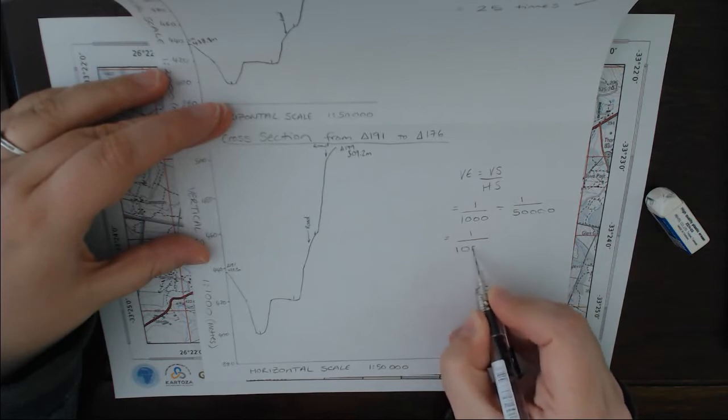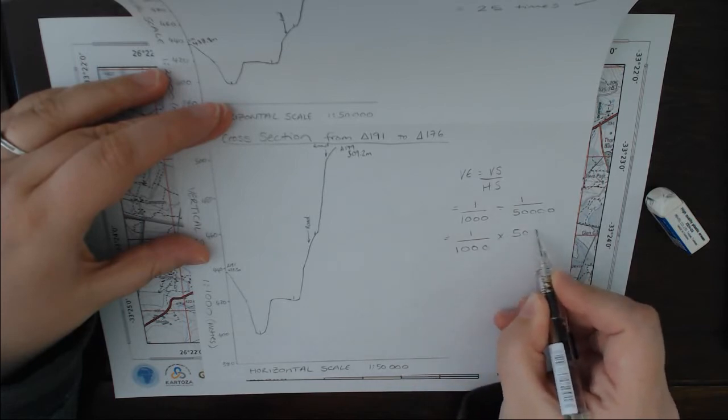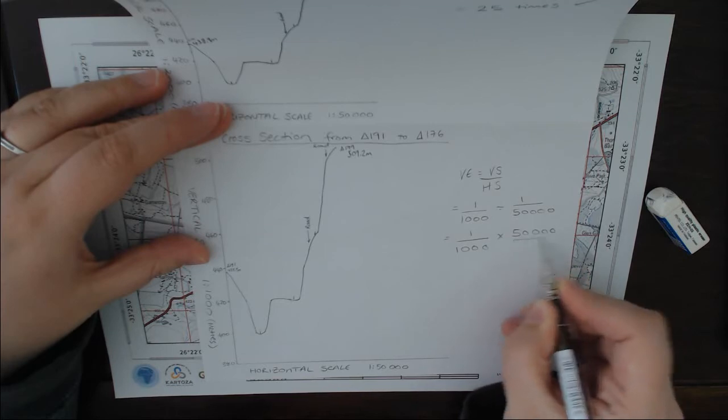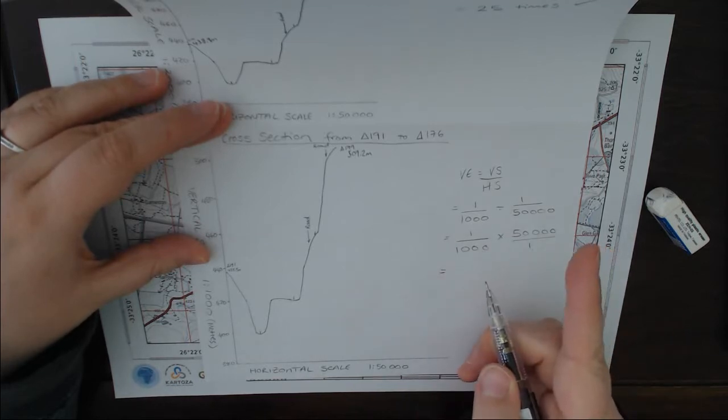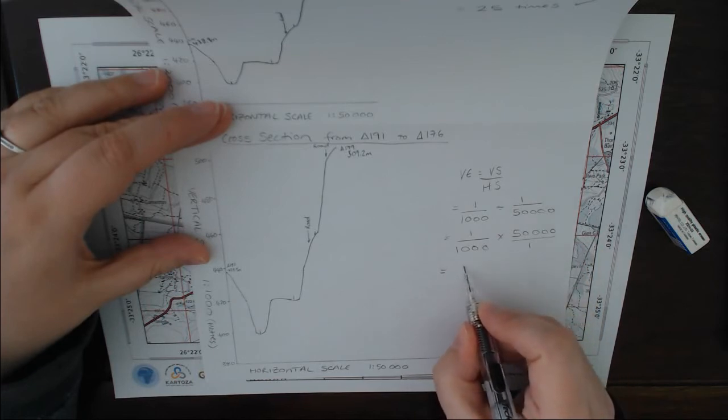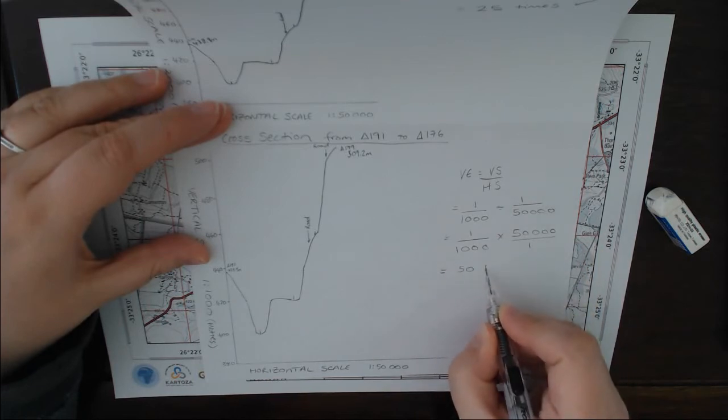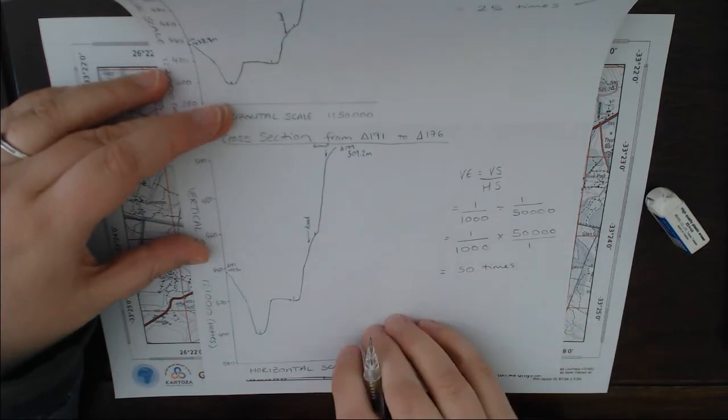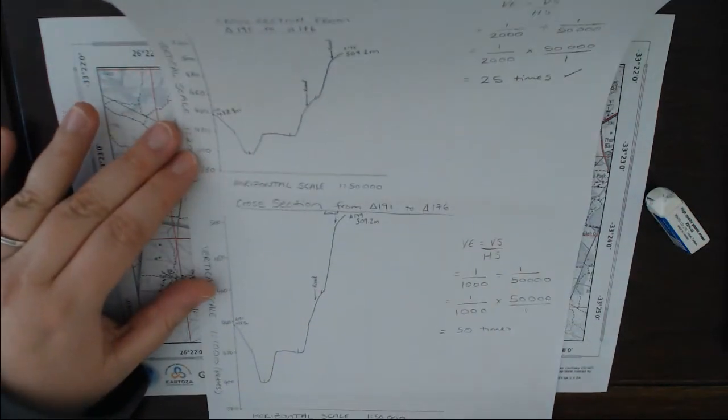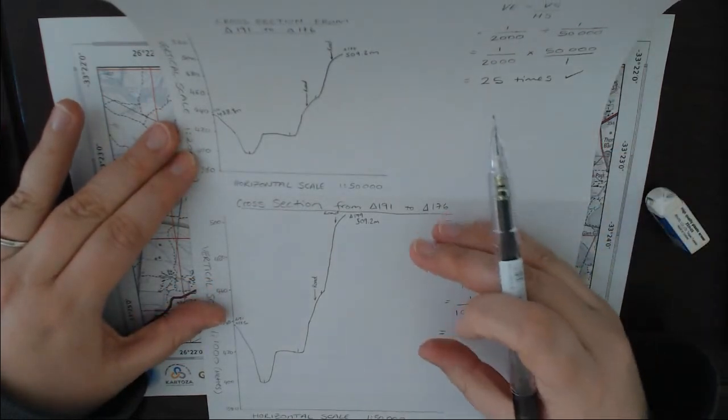We are going to now do the inversion. 1 over 1,000 multiplied by 50,000 over 1. Then don't be a martyr, use that calculator. That means that this is 50 times in terms of its exaggeration. So it is 50 times exaggerated from what it actually is.